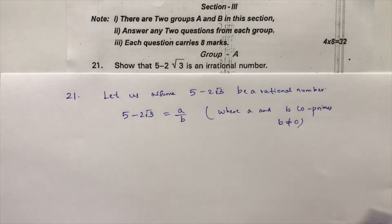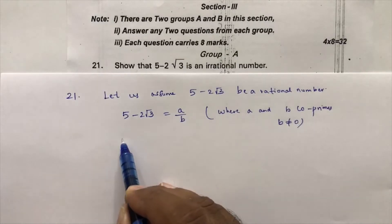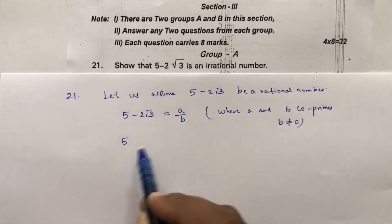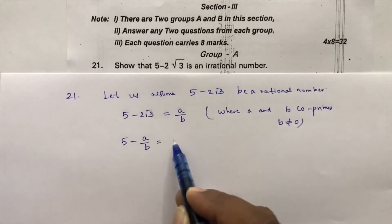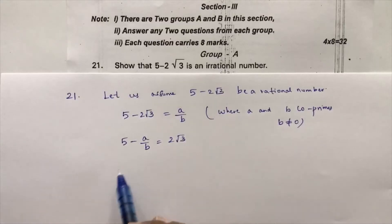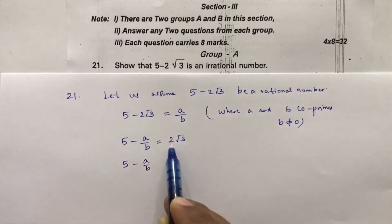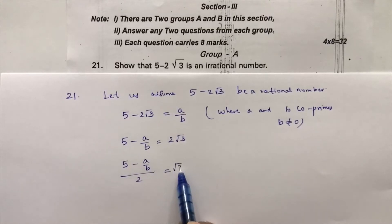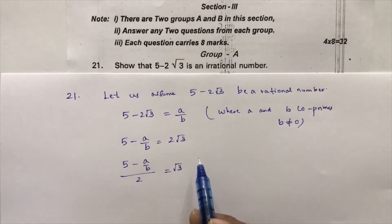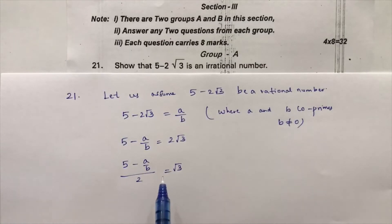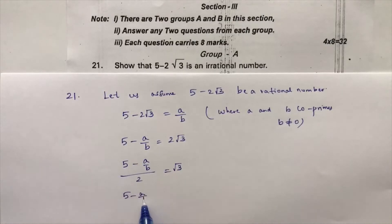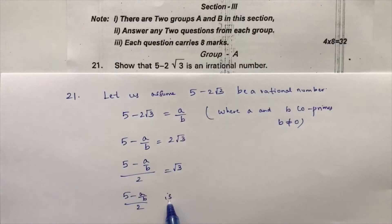Now, 5 minus 2 root 3 equals a by b, so 5 minus a by b equals 2 root 3, and therefore (5 minus a by b) divided by 2 equals root 3. Here, (5 minus a by b) divided by 2 is rational, because a and b are integers.